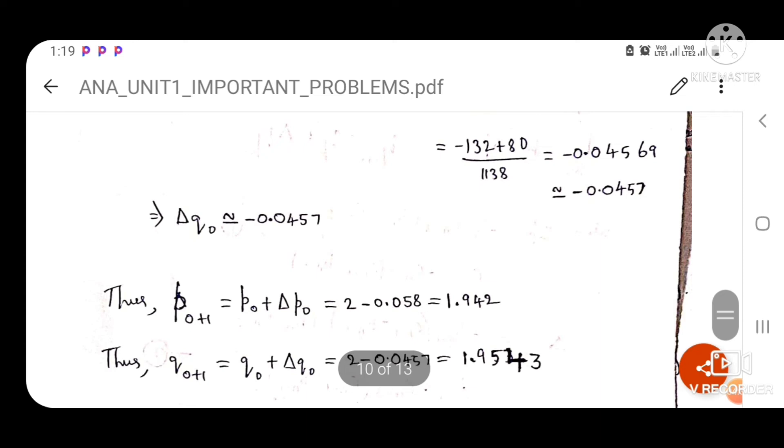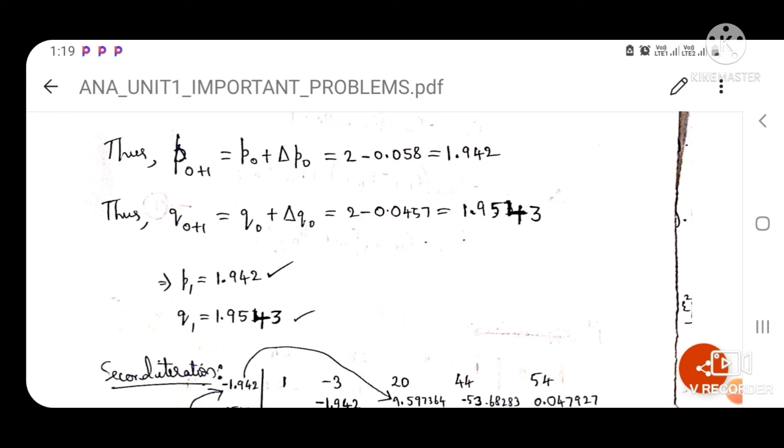Now what we can say is that P0 plus 1, which equals to P naught plus del P naught, will be equal to this value. Basically it is 0 plus 1 because k has been taken as 0. That's why when 0 plus 1 on the outside, on the inner part we get 0 and 0. Same thing happens for Q naught, and we get the values of P1 and Q1.